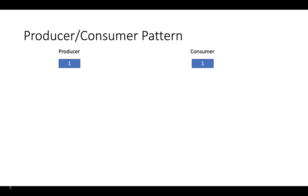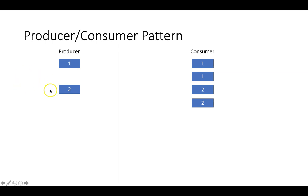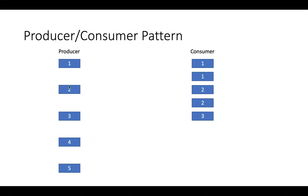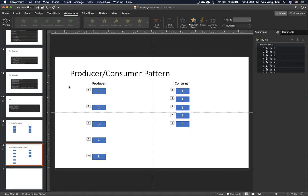You might produce one, then the consumer won't consume it immediately. The producer takes some time, then the consumer continues to consume old values. Then the producer produces two, the consumer consumes two, but because the producer is slow the consumer again consumes old values. In this case, we need some blocking or control to manage the producer-consumer behavior.